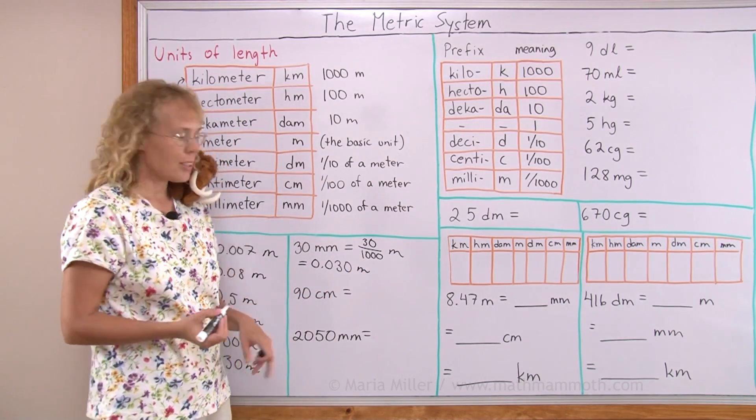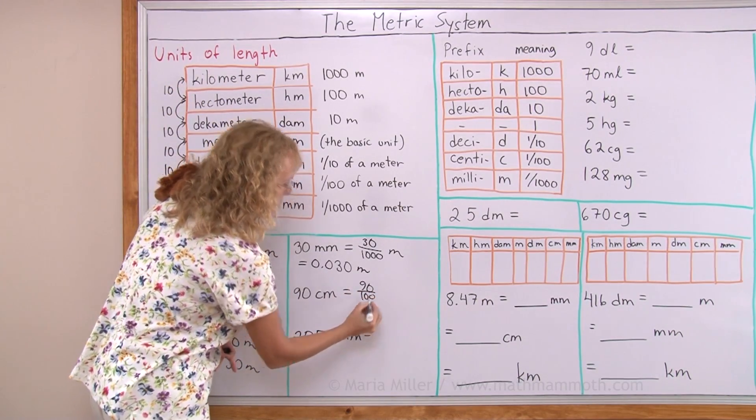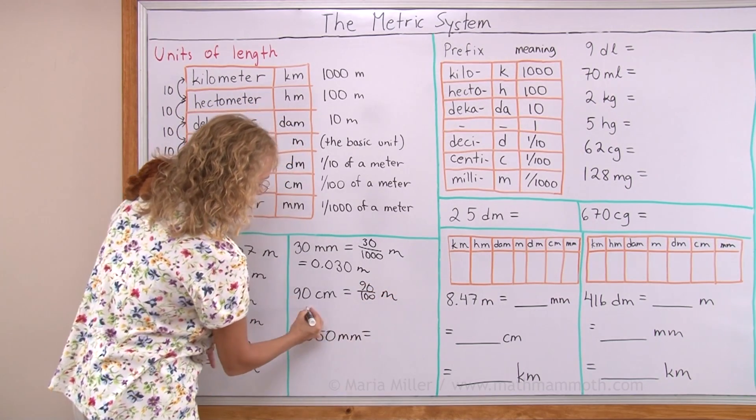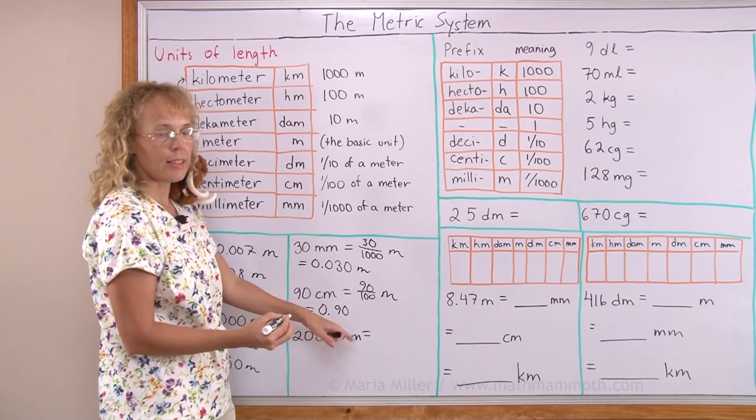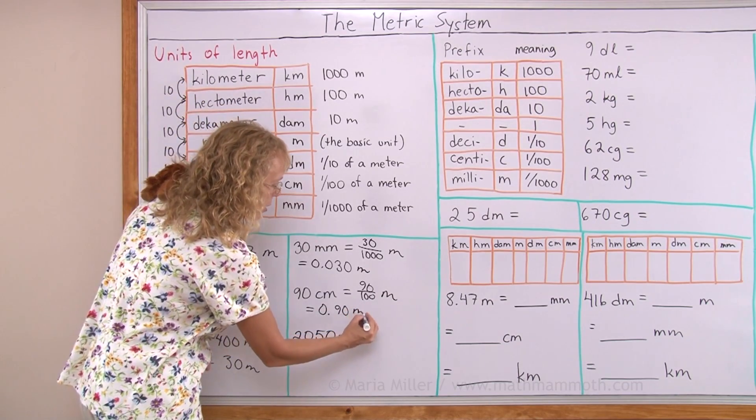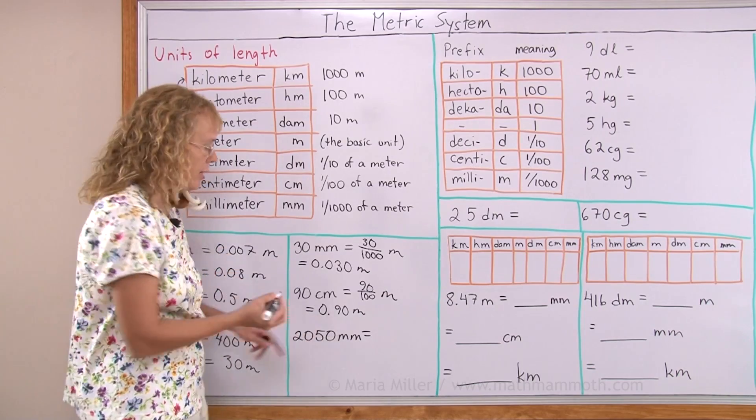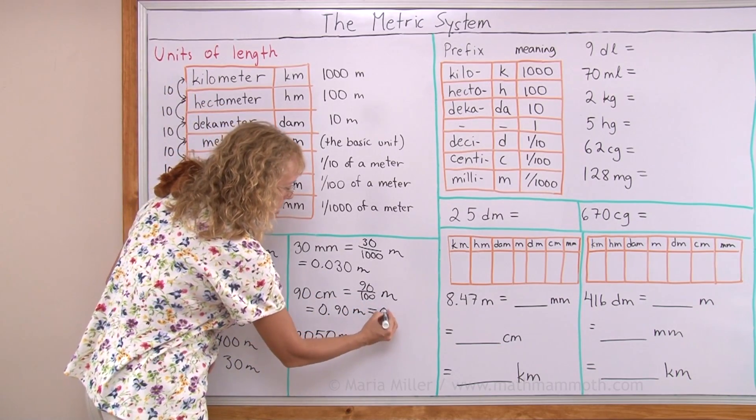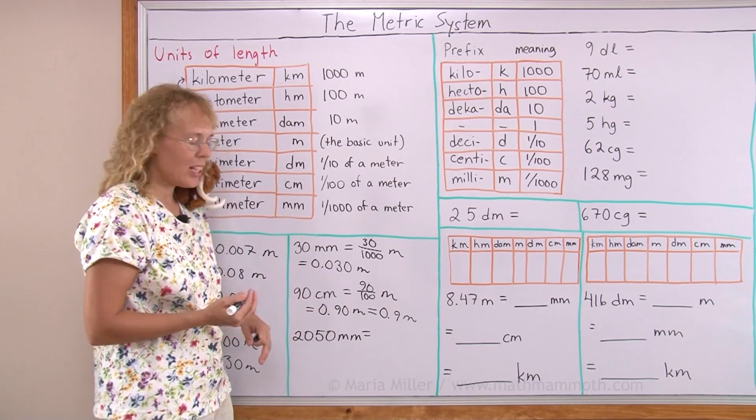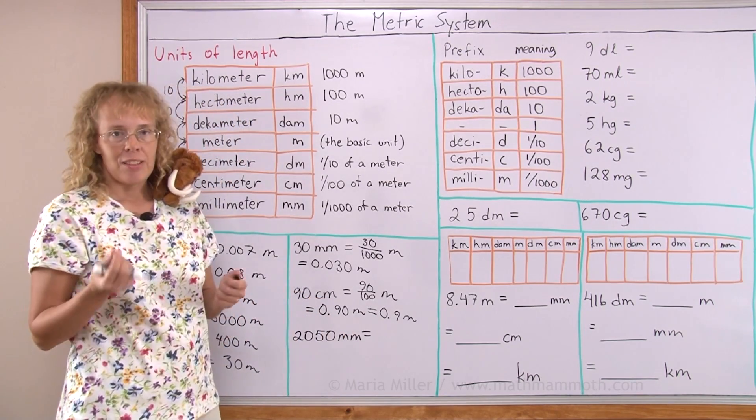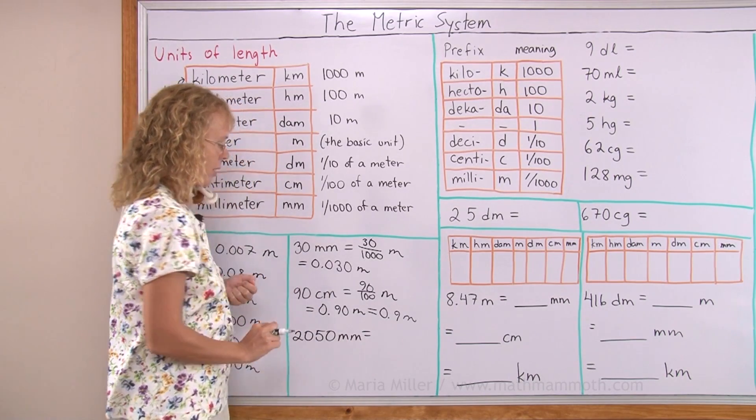Ninety centimeters, centi meaning one-hundredth, so this is ninety-hundredths of a meter, 0.90 meters. And here you could simplify it to 0.9 meters if you want to. If this is actually a measurement in physical science of some sort, then you would not want to drop the zero here.